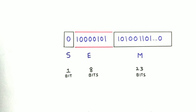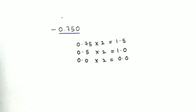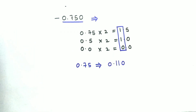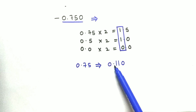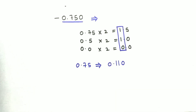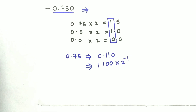For a better understanding, let's take another example — this time a negative number. The number is −0.750. To convert to binary, multiply by 2 and take the values. The binary value is 0.110. The first step is complete. Now we need to normalize it by shifting the point after the first 1. Normalization is also complete.